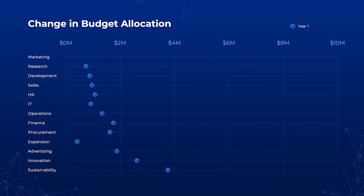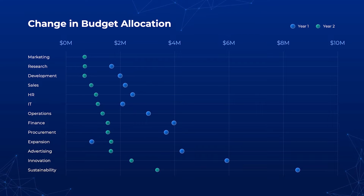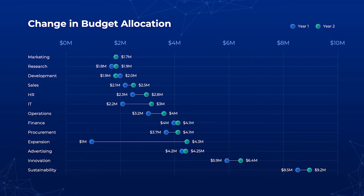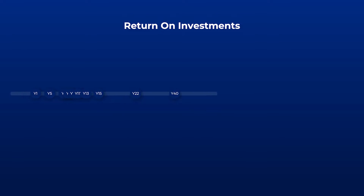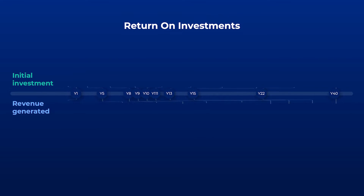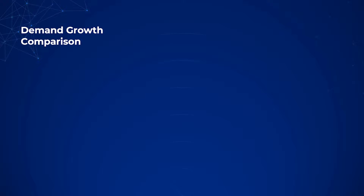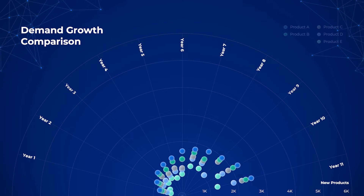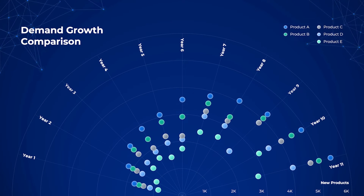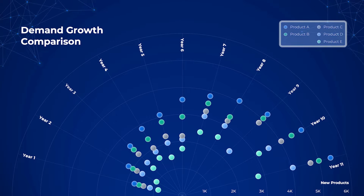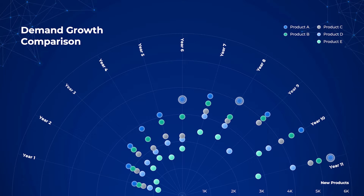Bubble charts rely on the size and/or placement of each circle or bubble to illustrate the volume, importance, and evolution of each data point. In this scenario, the bubble chart represents shift in consumer preferences over the years. Each shade of bubble indicates a separate product line. The higher the demand, the further the bubble is from the center.